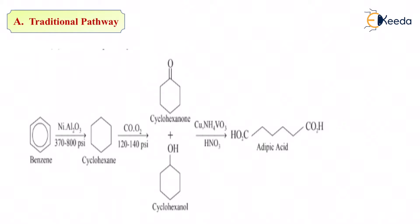To this benzene, if I add nickel and Al2O3 and give 370 to 800 PSI, the pi bonds break off. What will I get? I get only cyclohexane because the resonating pi bonds in the middle have broken off. To this, if I add carbon monoxide in presence of oxygen and increase the pressure to 120 to 140 PSI, cyclohexane gets converted into cyclohexanone plus cyclohexanol. It is important to understand what is cyclohexanone and cyclohexanol.